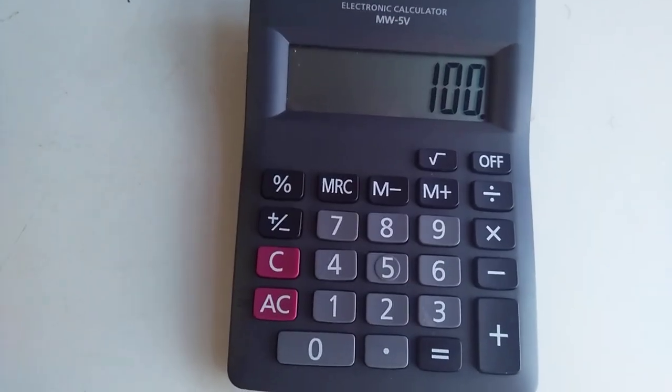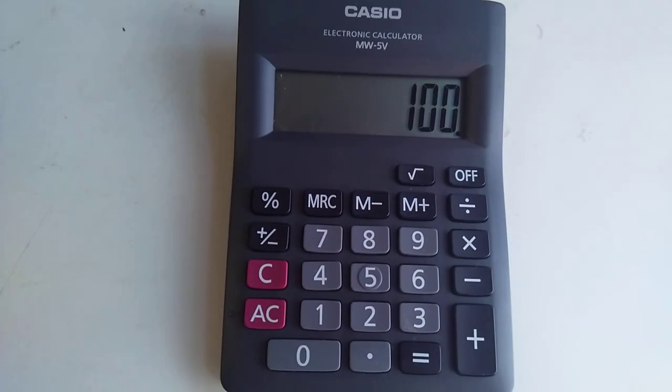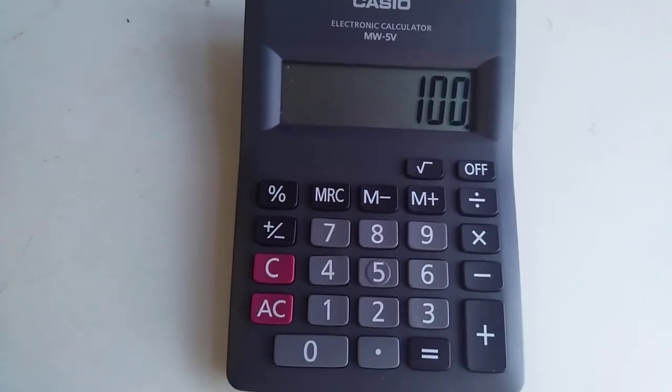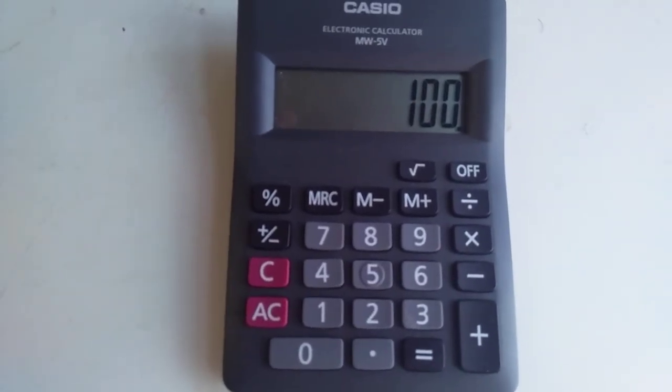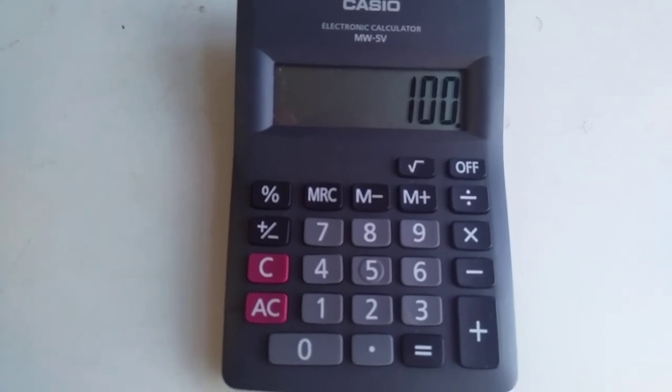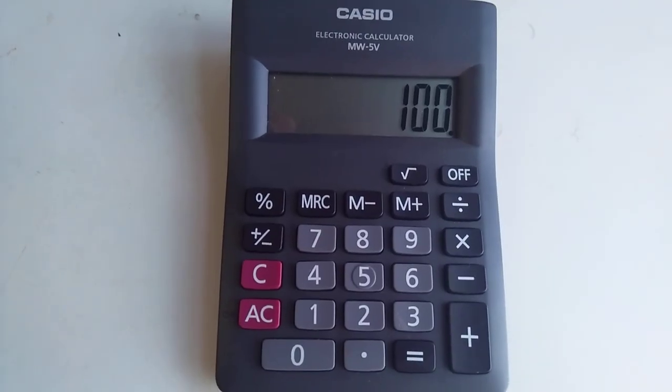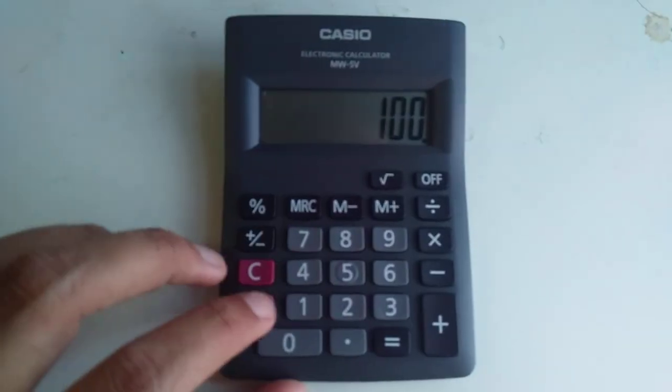So guys, you can see here it's very tricky. I didn't press 100. I just pressed 1, and then division sign, and then percentage sign, and 100 is showing on my screen. I will show you again how you can do it.